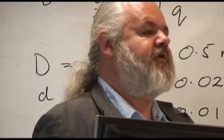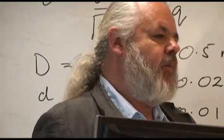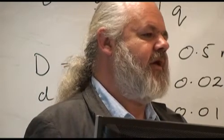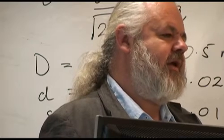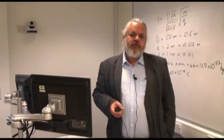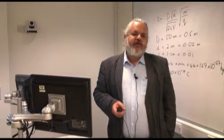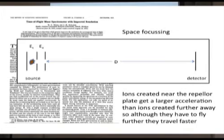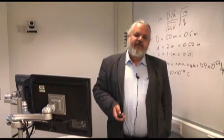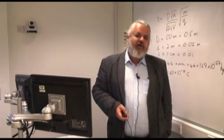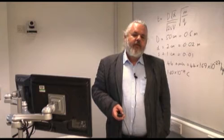Time of flight mass spectrometers have been about since shortly after World War II. But in 1955, Wiley and McLaren realized that the resolution could be dramatically improved by two innovations. Firstly, by having two acceleration regions rather than one. And secondly, by introducing a time delay between creating the ions and extracting them. Here is a copy of the first page of Wiley and McLaren's original paper published in the Review of Scientific Instruments, a journal that is still going strong today. This paper has over 2,000 citations in the scientific literature, which gives you an indication of how influential it was.